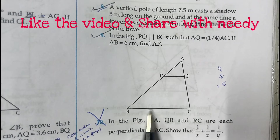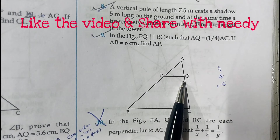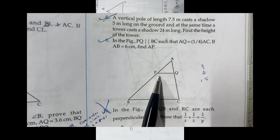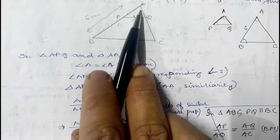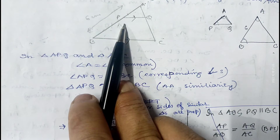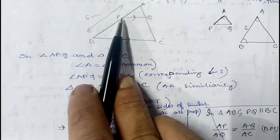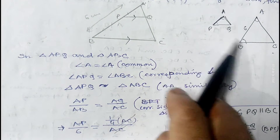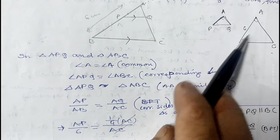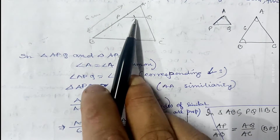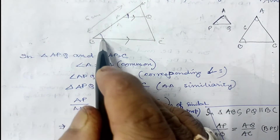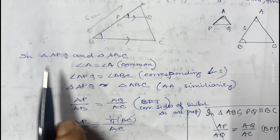In question 9, it is given that in the figure PQ is parallel to BC such that AQ is one-fourth of AC. If AB is 6 cm, find AP. Here PQ is parallel to BC, AQ is one-fourth of AC, AB is given as 6 cm, and we have to find the length of AP. Considering triangles APQ and ABC separately, angle A is common to both. Since PQ is parallel to BC, the corresponding angles are equal.